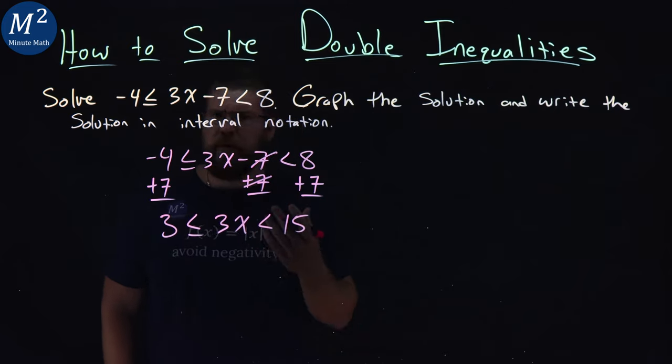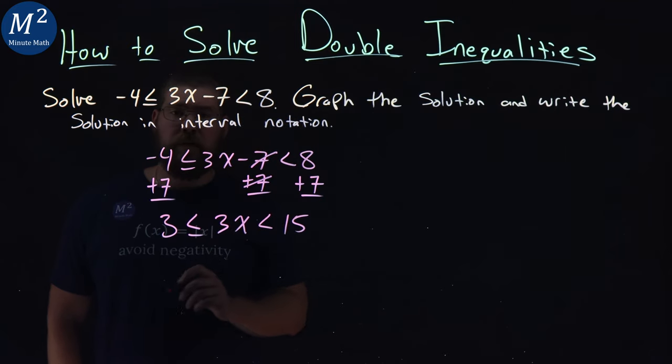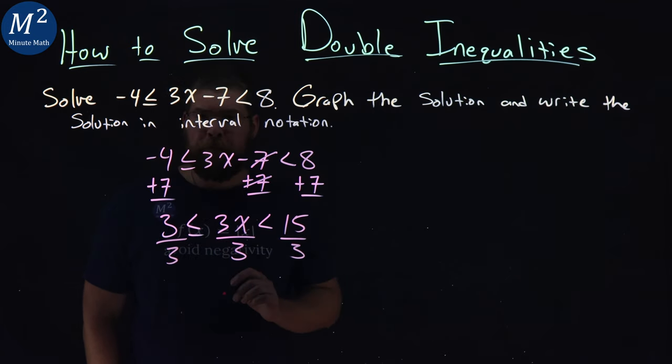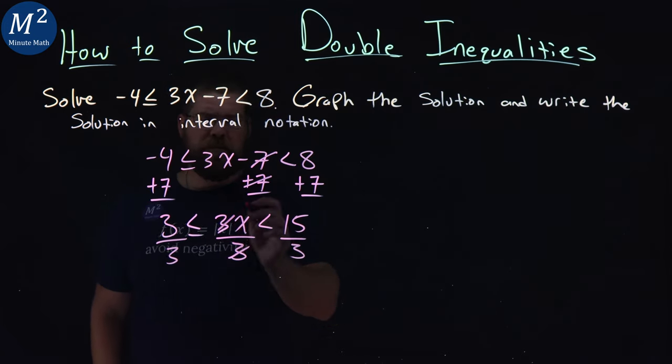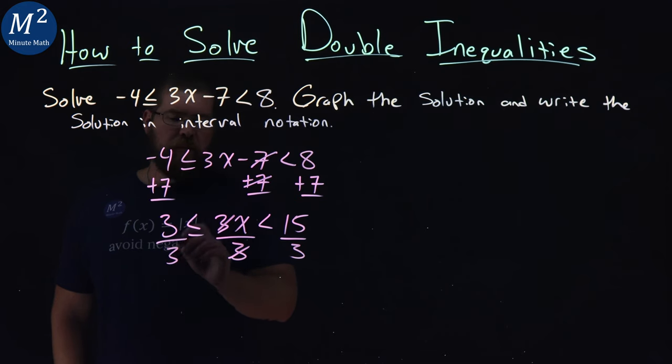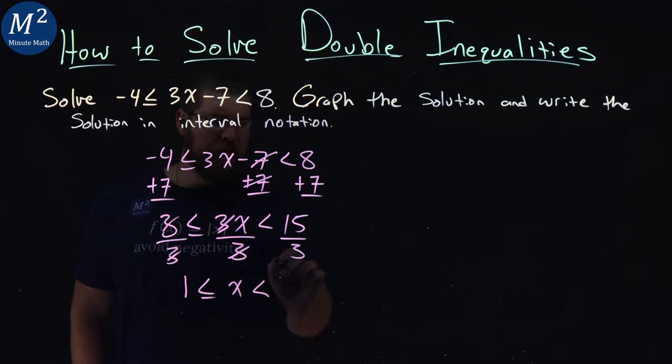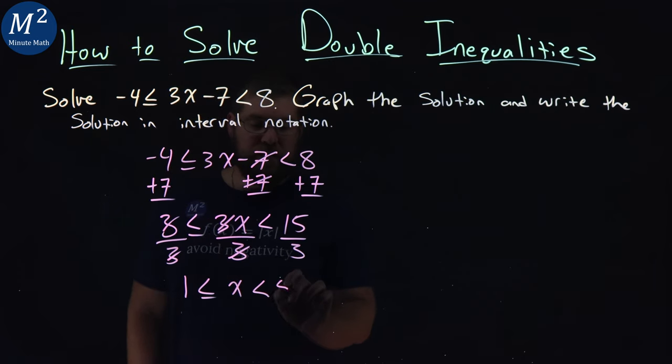Same principle applies here. We have multiplication between the three and the x, so we divide all parts by three. The threes in the middle cancel. Great. On the left-hand side, three and three cancel, so we're left with one. So we have one is less than or equal to x, which is less than fifteen divided by three is five.